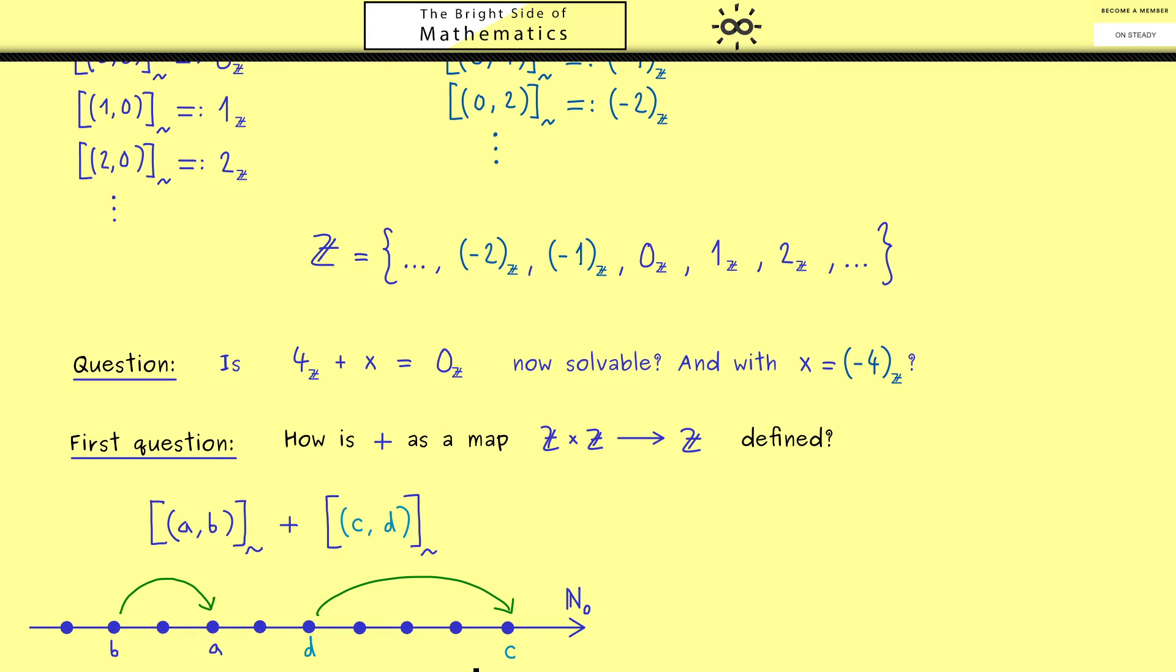Here we can also take the visualization with the jumps. So we have a here and b here, and c and d on the right. With this, you now should see the only useful definition we can have is adding the two jumps, which means we should add the target points and also the starting points.